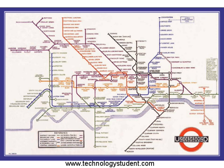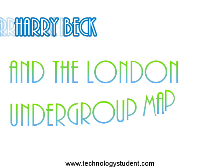Therefore, Beck's map is in the style of a topological map, but it is not to a strict scale, as distances between stations are not accurate. This ensures that all the stations fit on the map.